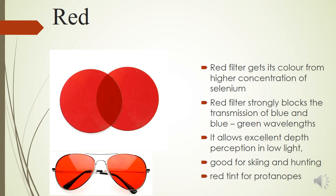The red filter gets its color from a high concentration of selenium added to the glass. It strongly blocks transmission of blue and green wavelengths — slightly above the UV range. It allows excellent depth perception in low light, making it good for hunting and skiing where judging distance is important. Red tints are also commonly prescribed to protanopes — colorblind individuals — who gain significant benefit and can overcome difficulties caused by their color vision deficiency.